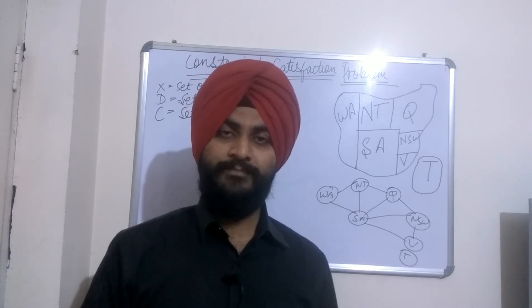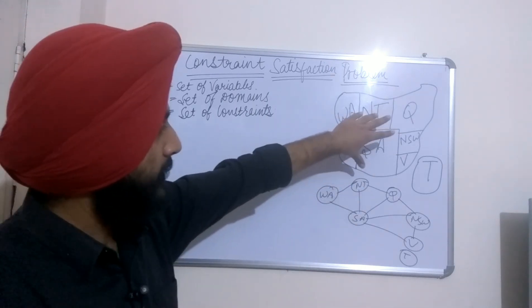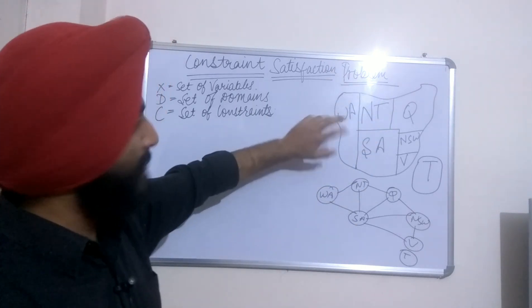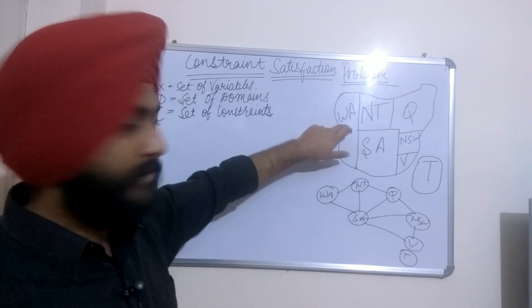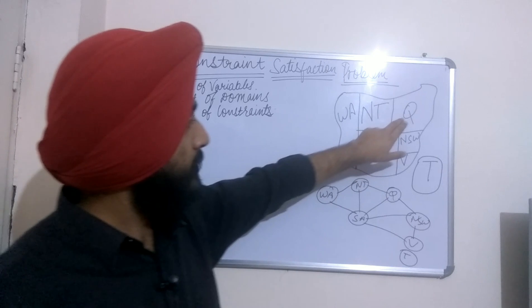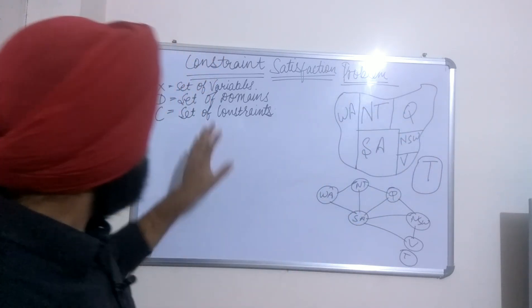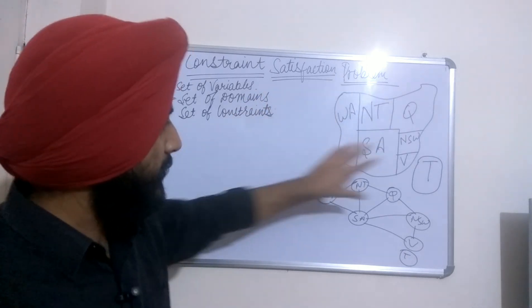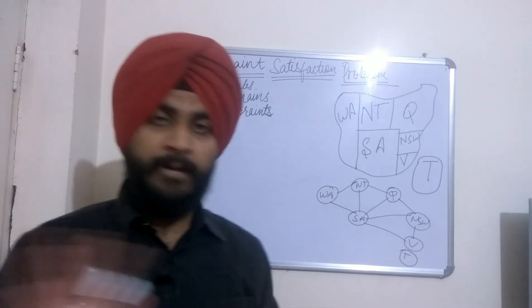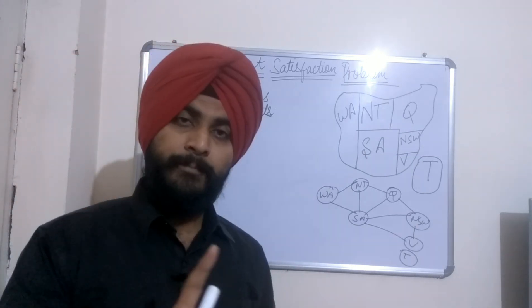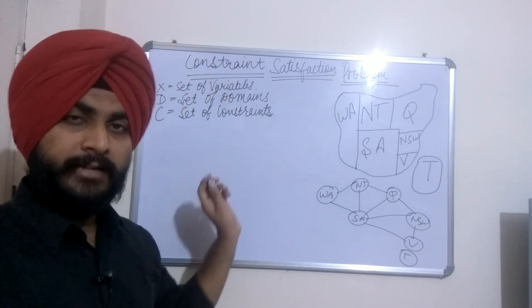This is a board — here is a graph, a rough graph. Basically this is a map of Australia. We have Western Australia, Northern Territory, Southern Australia, Queensland, New South Wales, Victoria, and Tasmania. The problem is: hum is map ko color karna hai — we have to color this map. So what are the ways to do this?